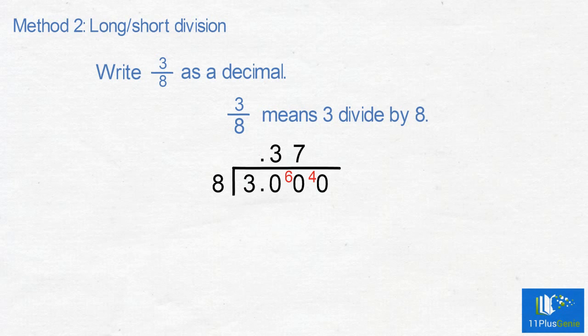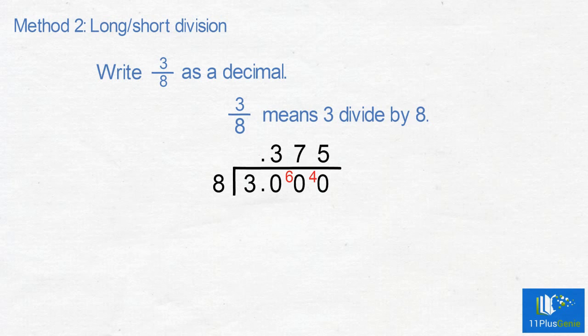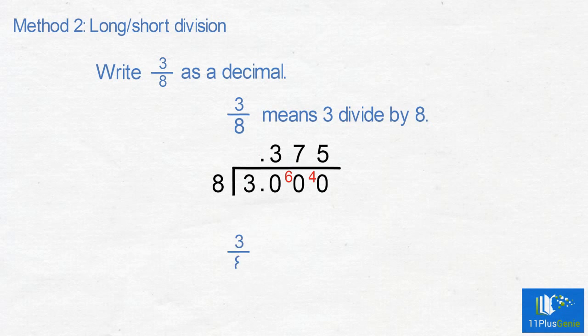Eights into 40 is 5 and there is no remainder. Three eighths equals 0.375 as a decimal.